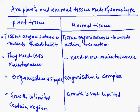Now, plant and animal tissues are not made of the same type of tissues. There are differences between plant tissue and animal tissue. Plants are stationary — they stay in one place — while animals can move here and there.